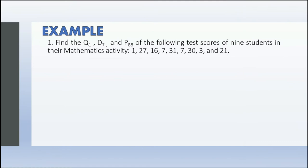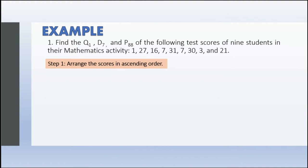Example number 1: Find quartile 1, decile 7, and percentile 88 of the following test scores of 9 students in their mathematics activity: 1, 27, 16, 7, 31, 7, 30, 3, and 21. The first step in the Mendenhall and Sincich method is to arrange the scores in ascending order.